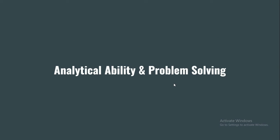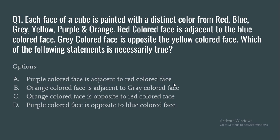The first section is analytical ability and problem-solving. Question 1: Each face of a cube is painted with a distinct color from red, blue, gray, yellow, purple, and orange. The red colored face is adjacent to the blue colored face. The gray colored face is opposite the yellow colored face. Which of the following statements is necessarily true? Options: (a) purple face is adjacent to red face, (b) orange face is adjacent to gray face, (c) orange face is opposite to red face, (d) purple face is opposite to blue face.